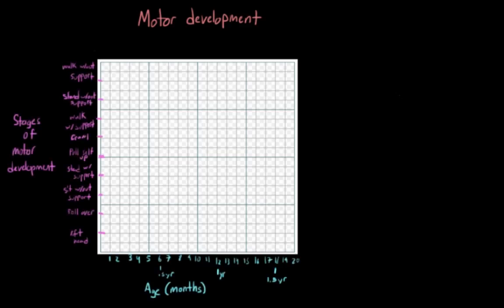To do this, I have this graph. I've drawn in our axes ahead of time. On our x-axis, we have age in months, but I've also put some years on there. Six months is half a year, 12 months is a year, and 18 months is one and a half years. On the y-axis, we have a list of major motor milestones.